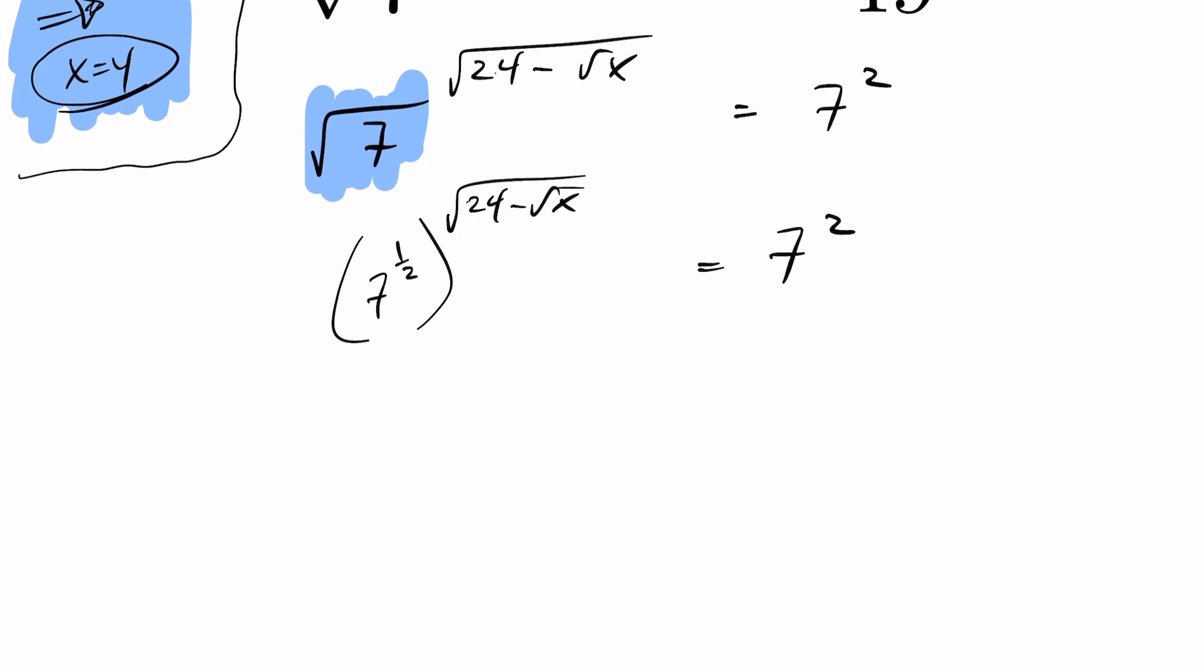Continuing on, I have power to a power. And whenever you have power to a power, you multiply. So this becomes 7 to the square root of 24 minus root x over 2 equals 7 to the power of 2.